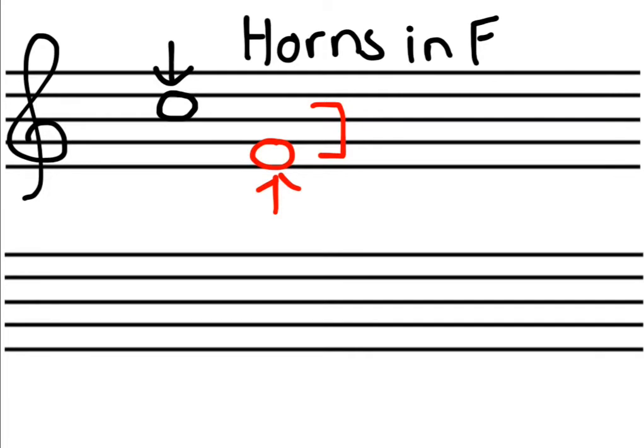It should be pretty obvious to you now that it's very important that you understand intervals, because the rest of this lesson will not make any sense unless you know what a major second is, what a minor third is, and what a perfect fifth is. These are the intervals we are going to be using to transpose melodies from now on. So if you don't understand intervals, I suggest that you watch the lesson 5 video of the basic music theory course and then come back to this lesson.